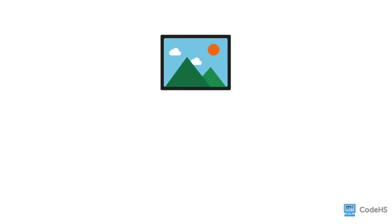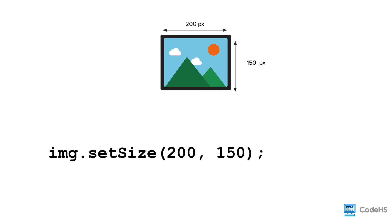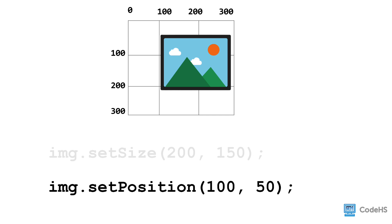Next, we need to customize the WebImage. We can set its size and its position on the canvas. To set the size of the image, we write the name of the variable storing the image, dot, setSize, followed by parentheses. Between the parentheses, we write the width and height of the image — 150 pixels. To change its position, we write the name of the variable storing the image, dot, setPosition, followed by parentheses. Between the parentheses, we write the x and y coordinate of where the top left corner of the image should be anchored to the canvas — in this case, 100 comma 50.